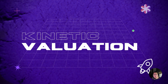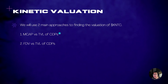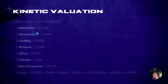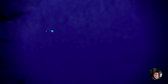Let's look at Kinetic valuations. We won't go into too much detail, but mainly the two approaches will be to use the MCAP versus TVL of other CDP projects, as well as the FDV versus TVL of other CDP projects. We have done the math between the various popular CDPs like MakerDAO, Abracadabra, Liquity, Alchemix, CDAO, Amstable and MAS, and the average is about 14.61% in terms of the MCAP versus TVL.